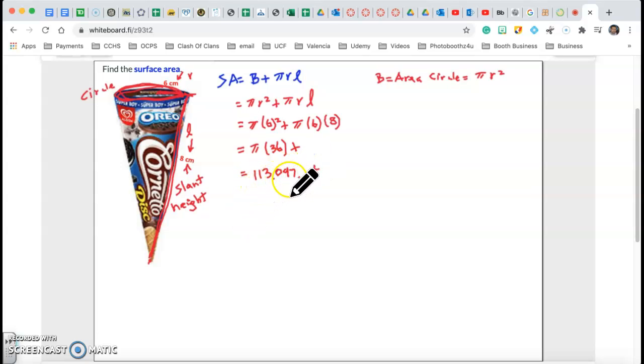So it's 113.097 plus 6 times 8 is 48. So it's going to give me 48 times pi. And 48 times pi gives me, my calculator is going to give me 150.796. I'm using three decimal places. I'm keeping all those numbers in the calculator. And then I'm going to add that to my 113.097.